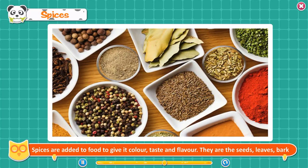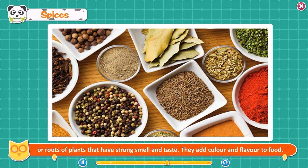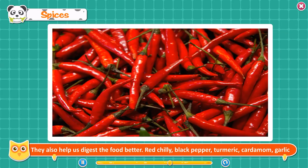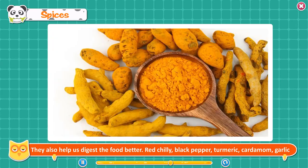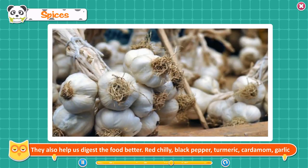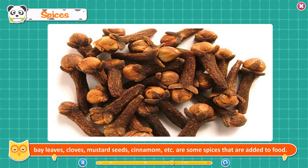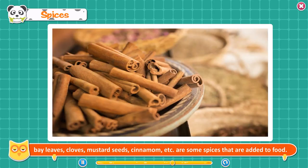Spices. Spices are added to food to give it color, taste, and flavor. They are the seeds, leaves, bark, or roots of plants that have strong smell and taste. They add color and flavor to food and also help us digest food better. Red chili, black pepper, turmeric, cardamom, garlic, bay leaves, cloves, mustard seeds, cinnamon, etc. are some spices that are added to food.